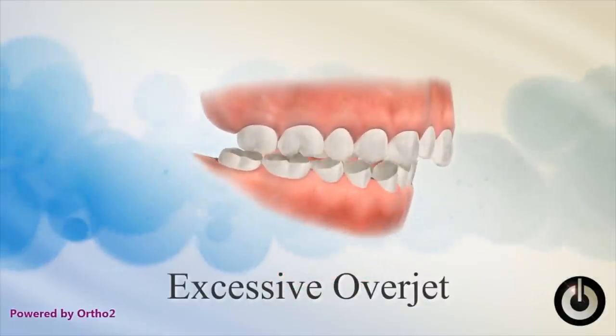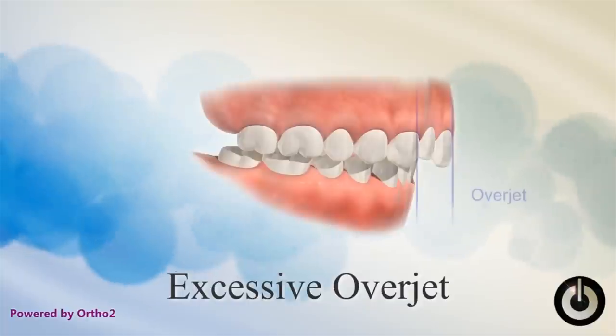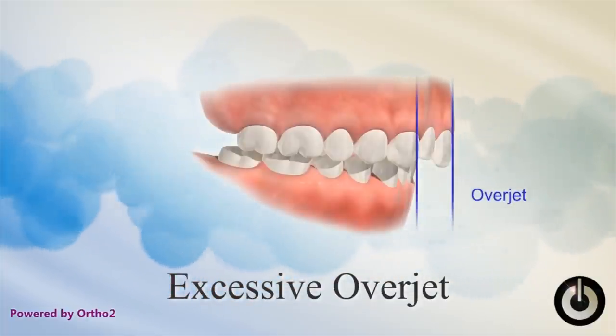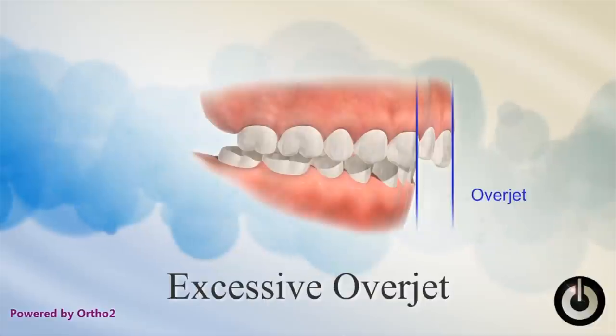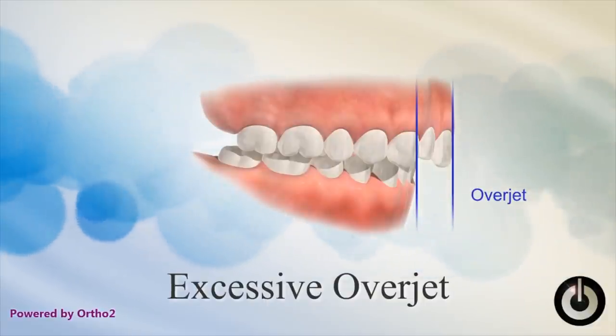Next, let's talk about overjets. This is a common term that's mispronounced as 'overbite.' Overjet refers to how far your upper teeth stick ahead of your lower teeth in the horizontal dimension. A lot of people call this an overbite, but that's not the right word — overbite refers to how much the teeth overlap vertically, which we'll talk about when we discuss deep bites.